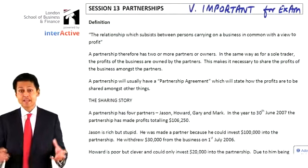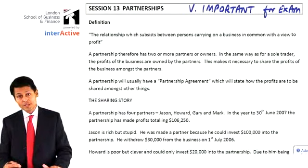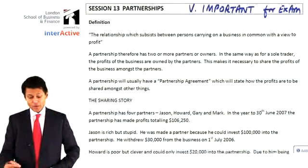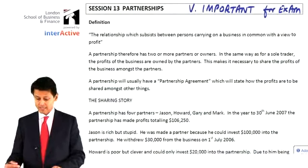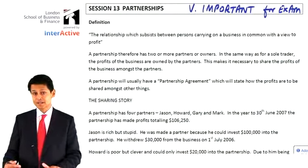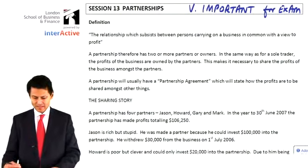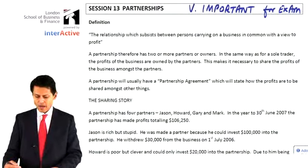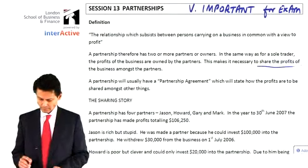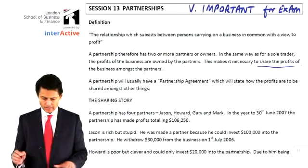A relationship which subsists — exists — between persons carrying on a business in common with a view to profit. A partnership therefore has two or more partners or owners. In the same way as for a sole trader, the profits of the business are owned by the partners. This makes it necessary to share the profits of the business amongst the partners.